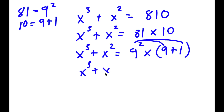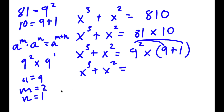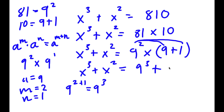So now I have x to the power of 3 plus x squared, and this is equal to 9 squared times 9. Using the property a to the power of m times a to the power of n equals a to the power of m plus n, we get 9 to the power of 2 times 9 to the power of 1, which equals 9 to the power of 3. So now I have 9 to the power of 3 plus 9 to the power of 2.